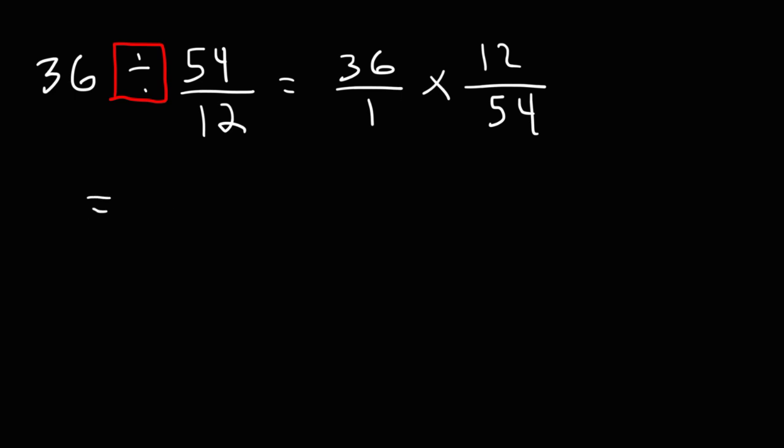What numbers can we break 36 down? We can write 36 as 6 times 6, 9 times 4, 12 times 3. Now 54 is also divisible by 9. So let's write 36 as 9 times 4. And we can write 54 as 9 times 6.